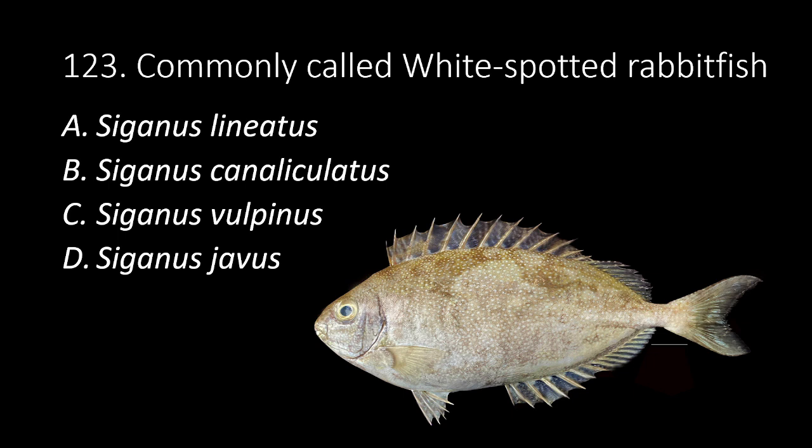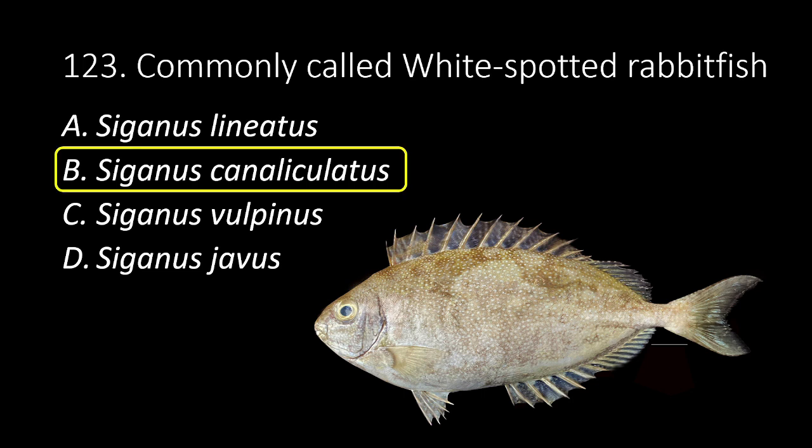123. Commonly called white-spotted rabbit fish. A. Siganus lineatus. B. Siganus canaliculatus. C. Siganus vulpinus. D. Siganus javus. The answer is B, Siganus canaliculatus.